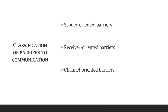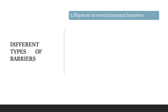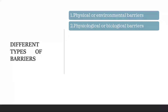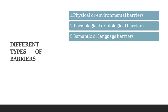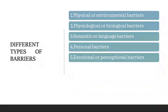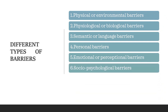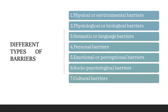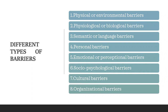As we have seen in earlier videos, the communication process involves a sender, receiver, and a channel to send the message, and the barriers could be related to any of these three. The different types of barriers are: physical or environmental barriers, physiological or biological barriers, semantic or language barriers, personal barriers, emotional or perceptional barriers, socio-psychological barriers, cultural barriers, and organizational barriers. We will see all of these in detail one by one.